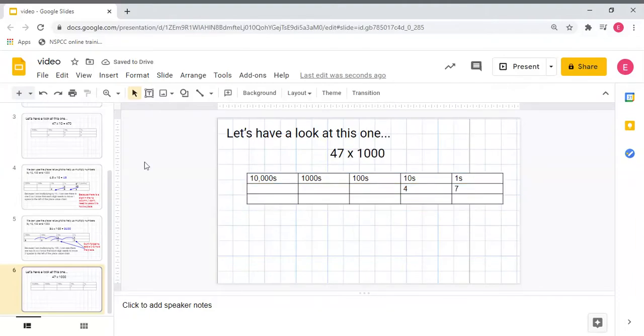Now when I was multiplying by 10, 10 had one zero, so I knew that each digit needed to move one place. When I was multiplying by 100, 100 has two zeros, so I know that each digit needs to move two places. Now I'm multiplying by 1,000. I've got three zeros, so I need to make sure that each digit is moving three places to the left.